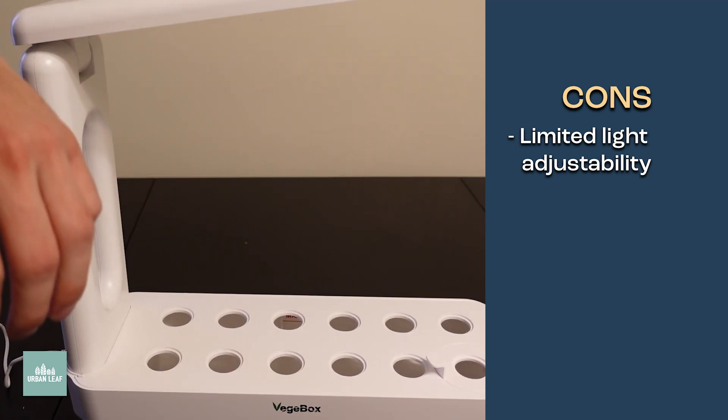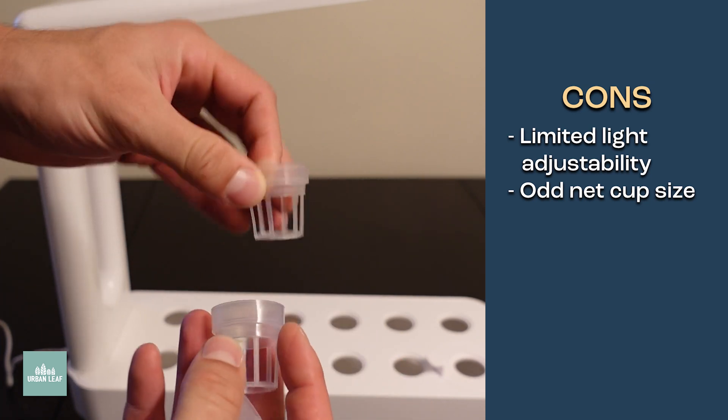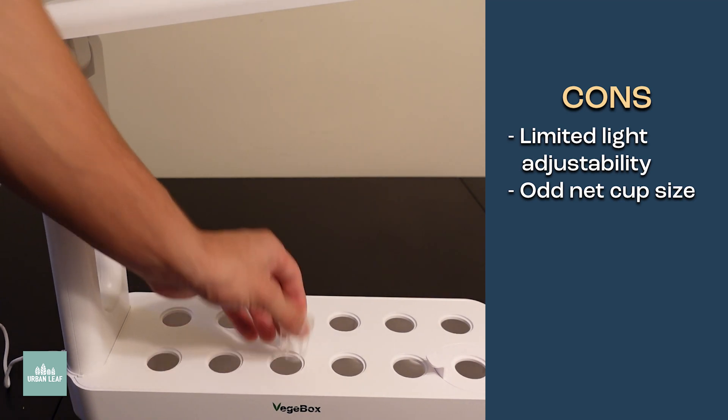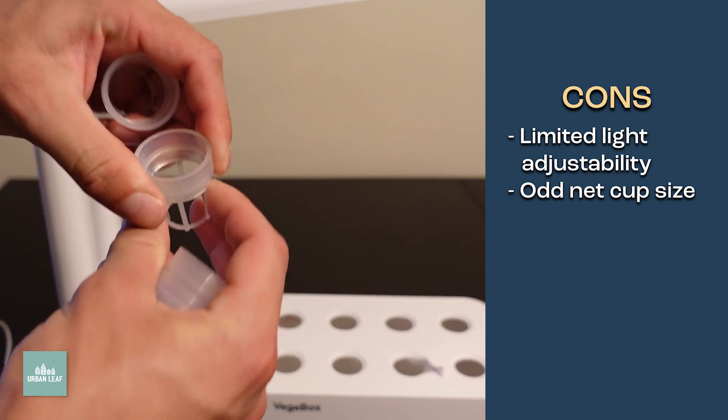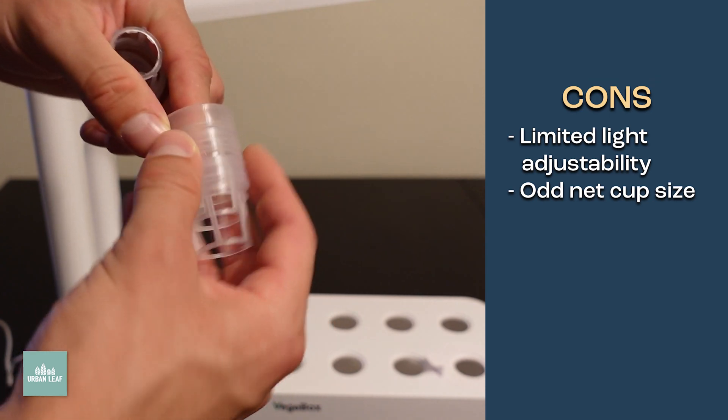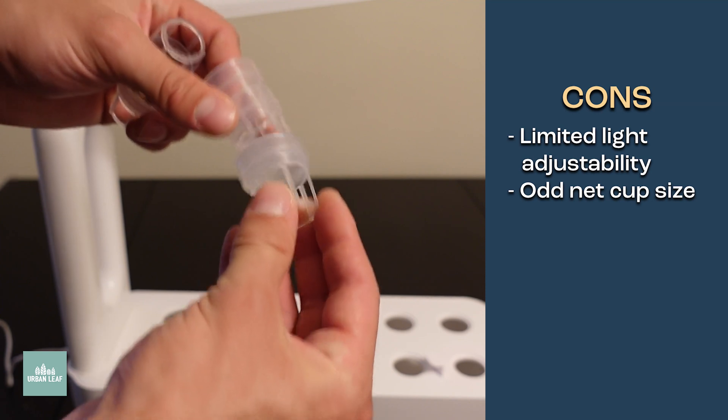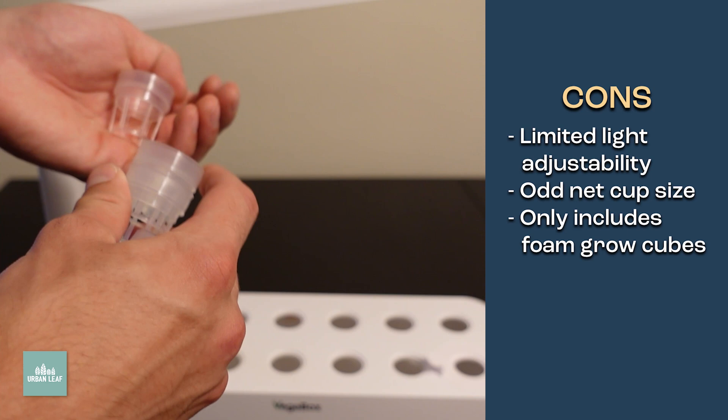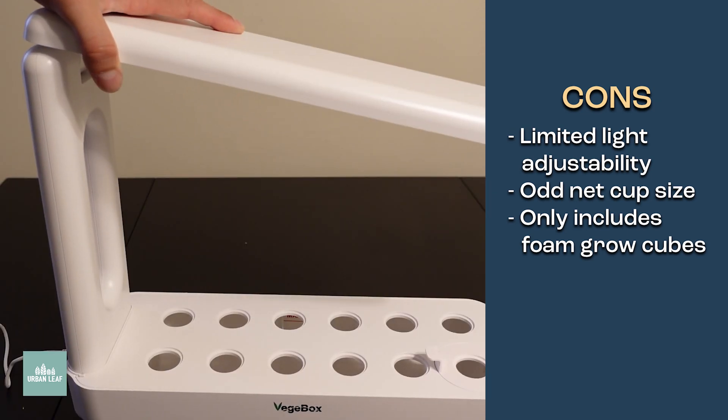Another con is that it has basically just one size net cup. This isn't a standard net cup, as far as I know. They're a little bit on the cheaper side. I could see these breaking fairly easily. And you are going to have to go and find the right size rock wool for these units. That is probably just like three quarter inch rock wool though. So not that big of an issue.